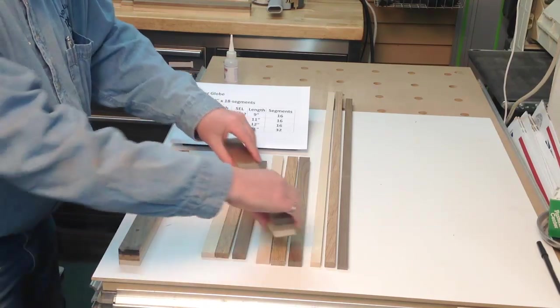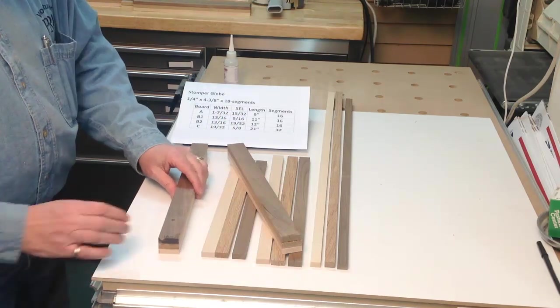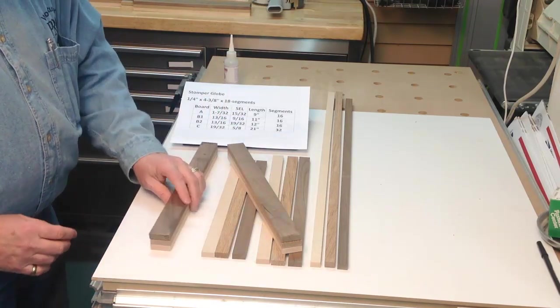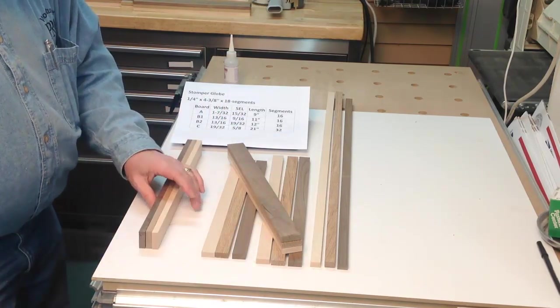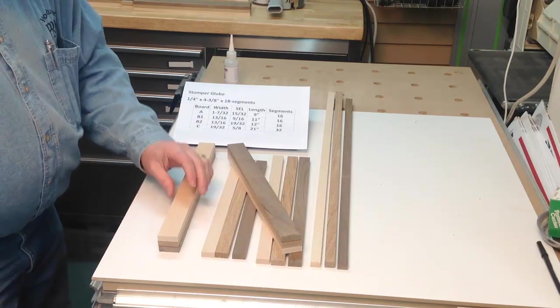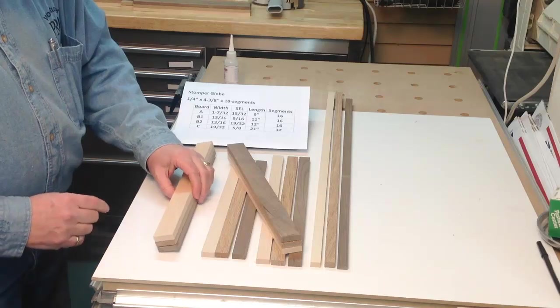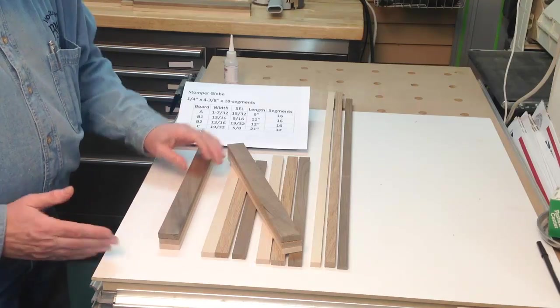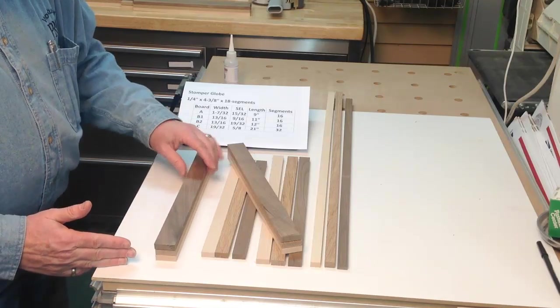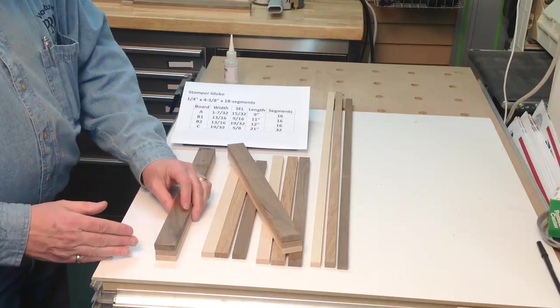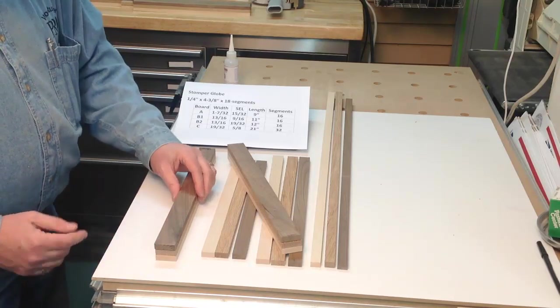And so when we get to the point where we're going to cut these on the miter saw, when we make our first cut, it's much easier if you're rolling one board as opposed to multiple boards. And also once you rotate it, it just needs to slide up against the fence and you know that everything is correct.